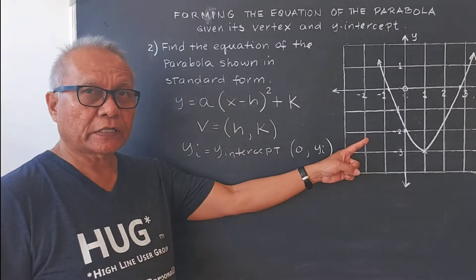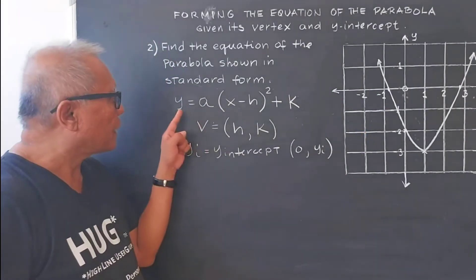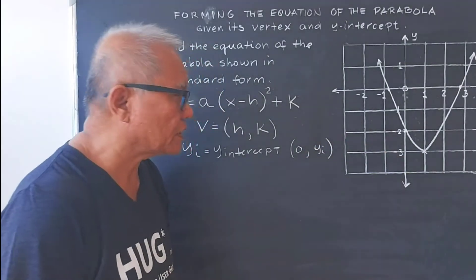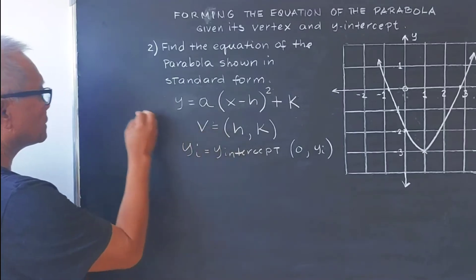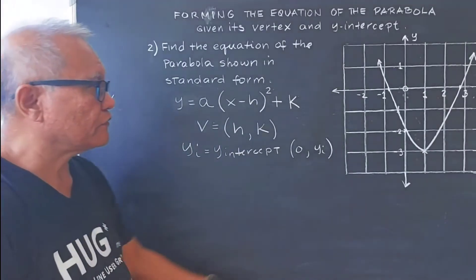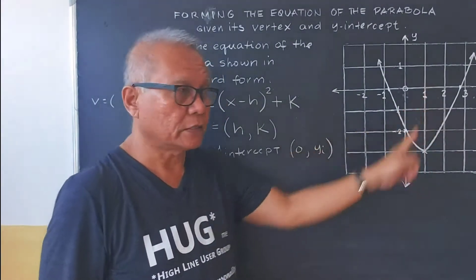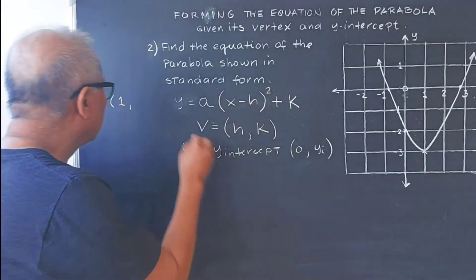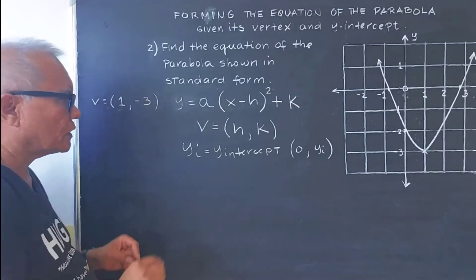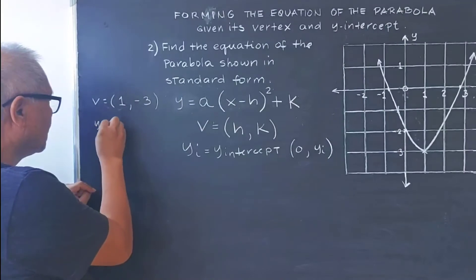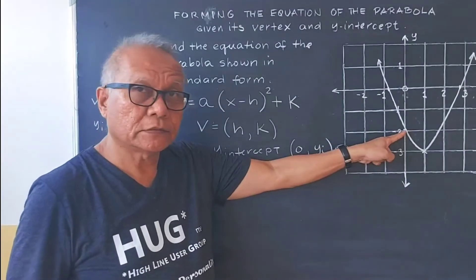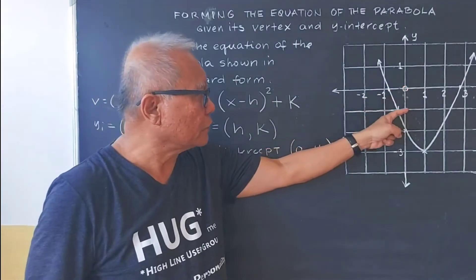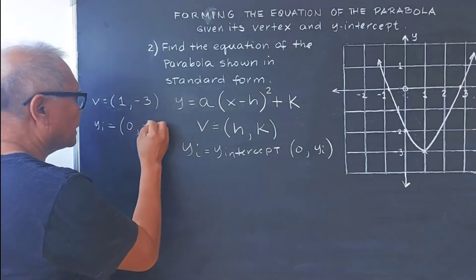Number 2. We have our graph here. Using the same vertex form formula for our parabolic curve, let's find the vertex coordinates: x is positive 1, and y is negative 3, so the vertex is (1, negative 3). For the y-intercept, x is 0 and y is negative 2, so the y-intercept is (0, negative 2).